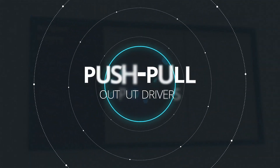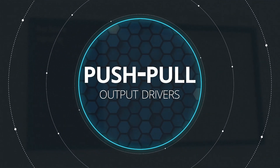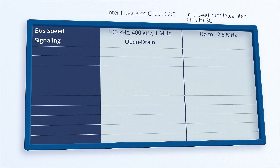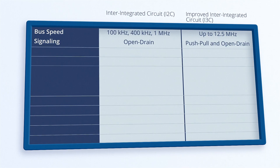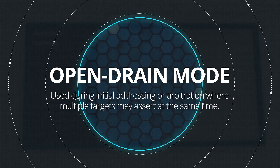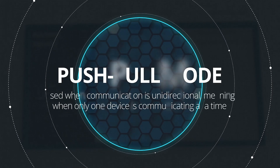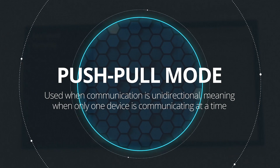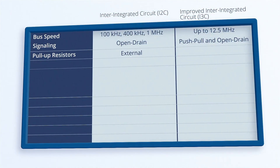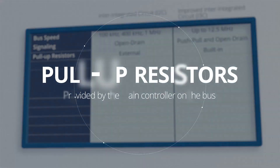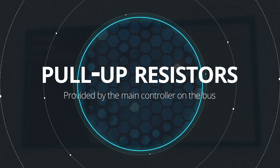This increase in speed is primarily due to the use of push-pull output drivers in i3C implementations. Depending on the bus state, i3C switches between open-drain and push-pull drivers. Open-drain mode is used during initial addressing or arbitration, where multiple targets may assert at the same time. Push-pull mode is used when communication is unidirectional, meaning when only one device is communicating at a time. Unlike i2C, i3C does not require external pull-up resistors — these are provided by the main controller on the bus.